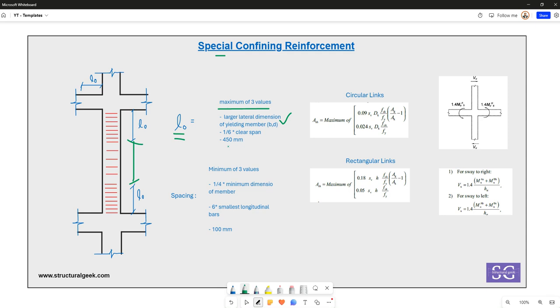So if the column is 300 by 400, the maximum column dimension which is 400 should be taken. Similarly, if the clear height of the column is 3000, one-sixth of that which is 500 should be taken as L0.